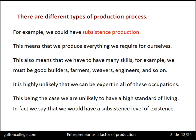Subsistence level of existence is when we try to do everything ourselves — very basic. We try to build our own shelter, grow our own crops, weave our own cloth. When it comes to bigger problems like medical problems, we can't fix those. So subsistence production is not an ideal form, but sometimes in certain periods in history, that's the way we had to live.